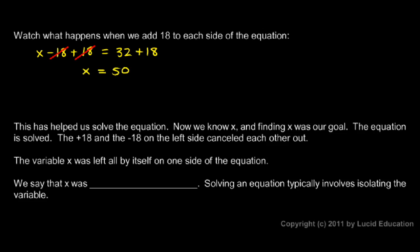When we manipulate an equation such that the result is the variable is all by itself on one side, in this case the variable x, we say that the variable is isolated. So you can fill that in in the notes. The variable is isolated.